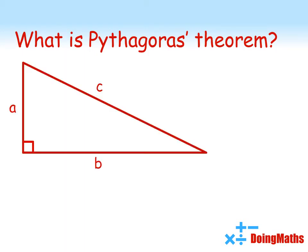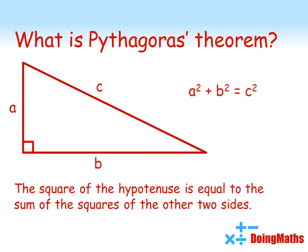If we take a right-angled triangle and we label the perpendicular sides a and b and the hypotenuse c, Pythagoras' theorem states that a squared plus b squared equals c squared, or as is commonly said, the square of the hypotenuse is equal to the sum of the squares of the other two sides.